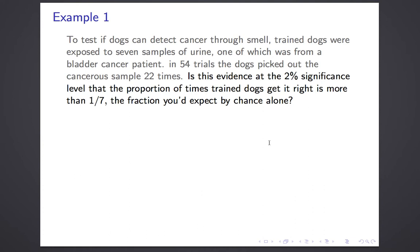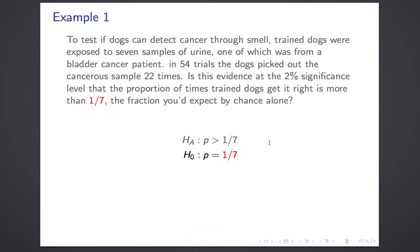The exact problem did not explicitly give a test proportion. The test proportion came from your understanding of what the null hypothesis was — that they're guessing randomly, not detecting anything — and a look at the situation: there are seven samples, equally likely. So our alternate hypothesis is p is greater than one-seventh, and our null hypothesis is p is equal to one-seventh. Is 22 out of 54 a surprising result if p equals one-seventh? That's what hypothesis testing will tell us.